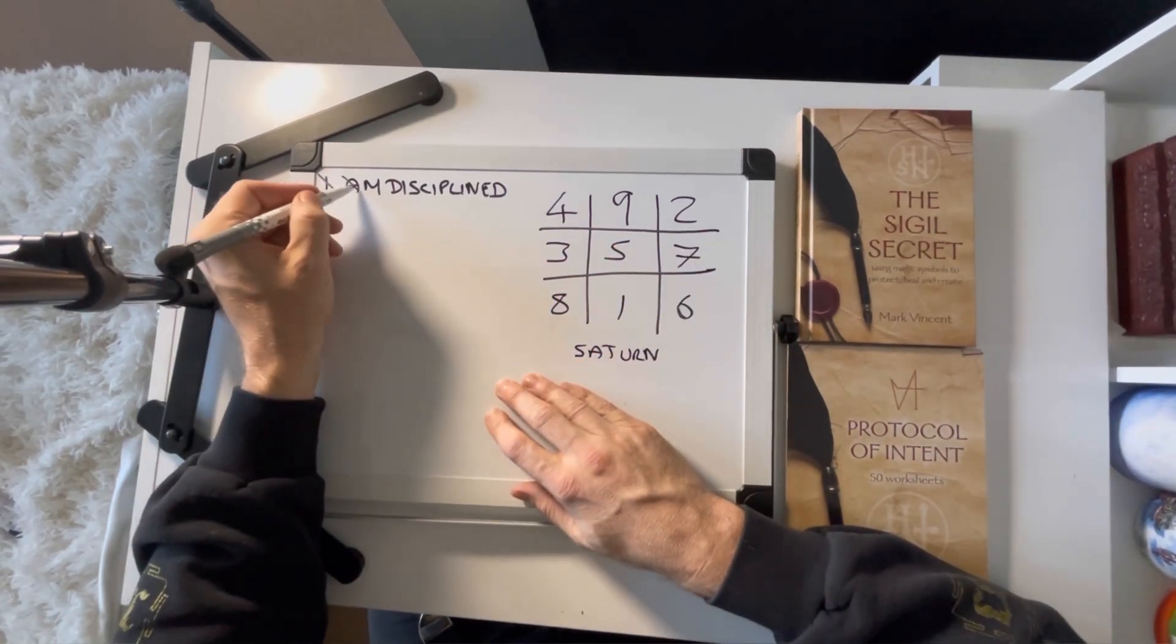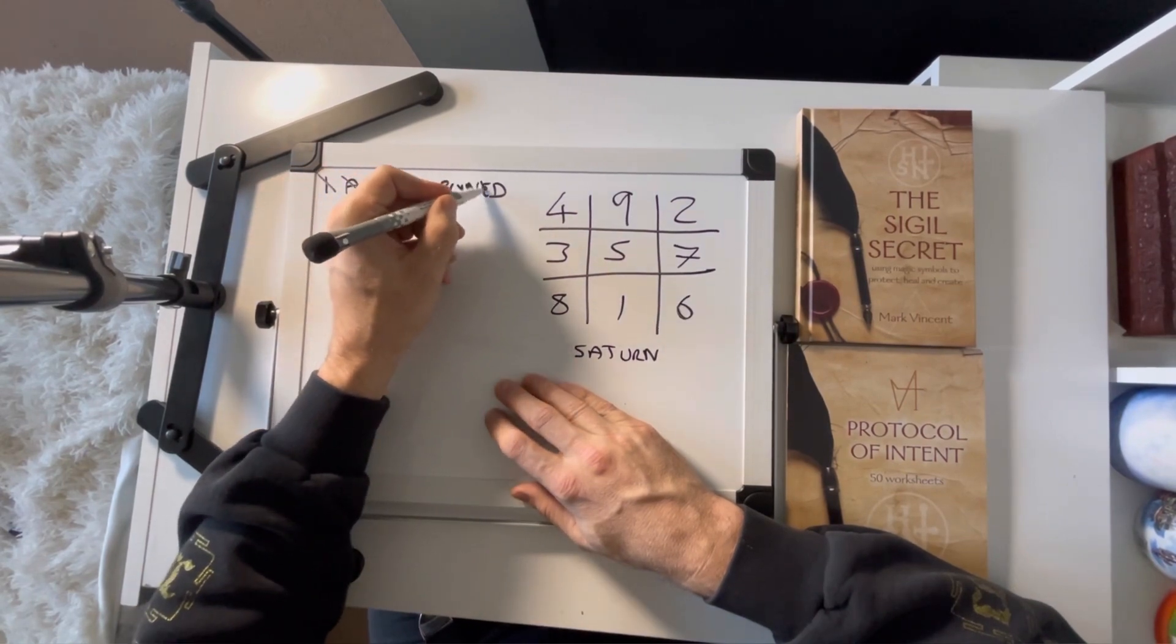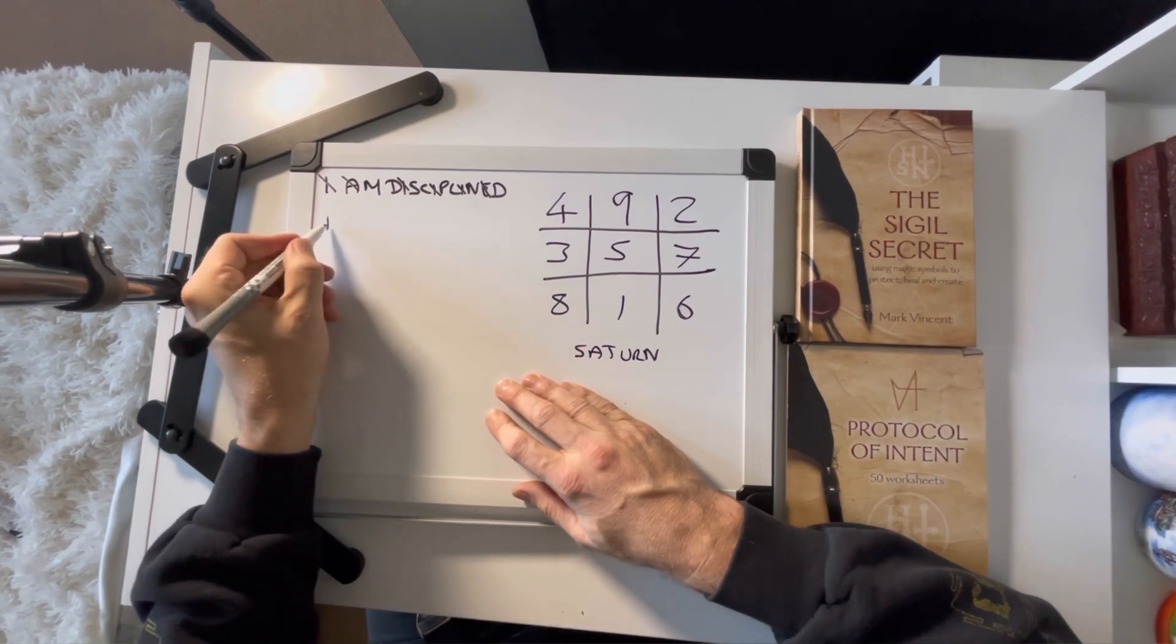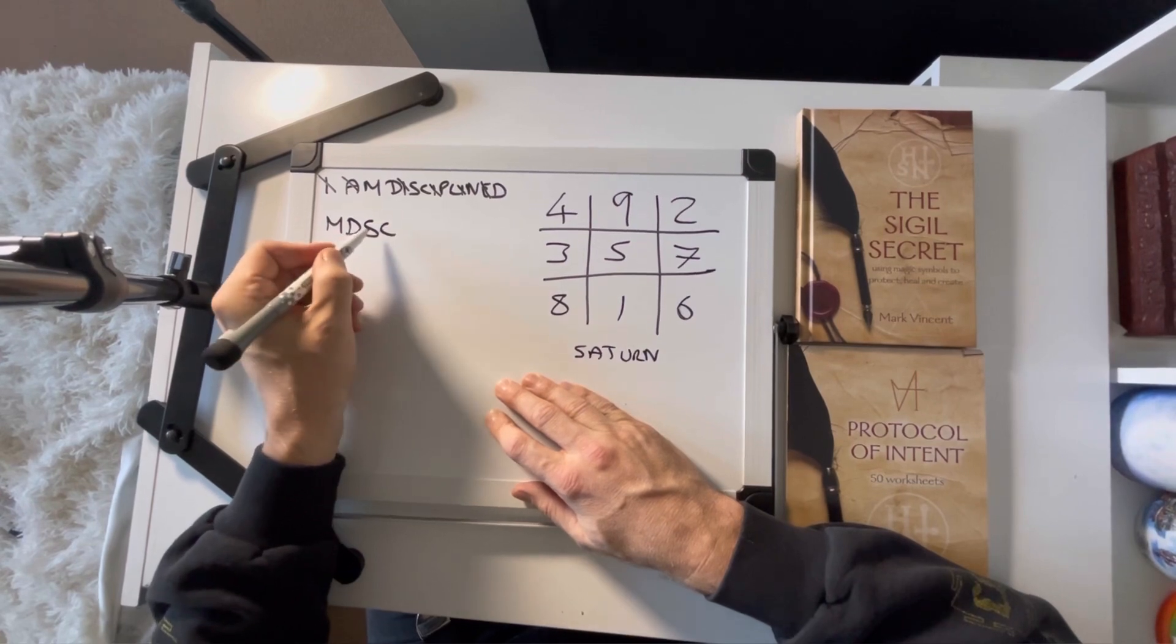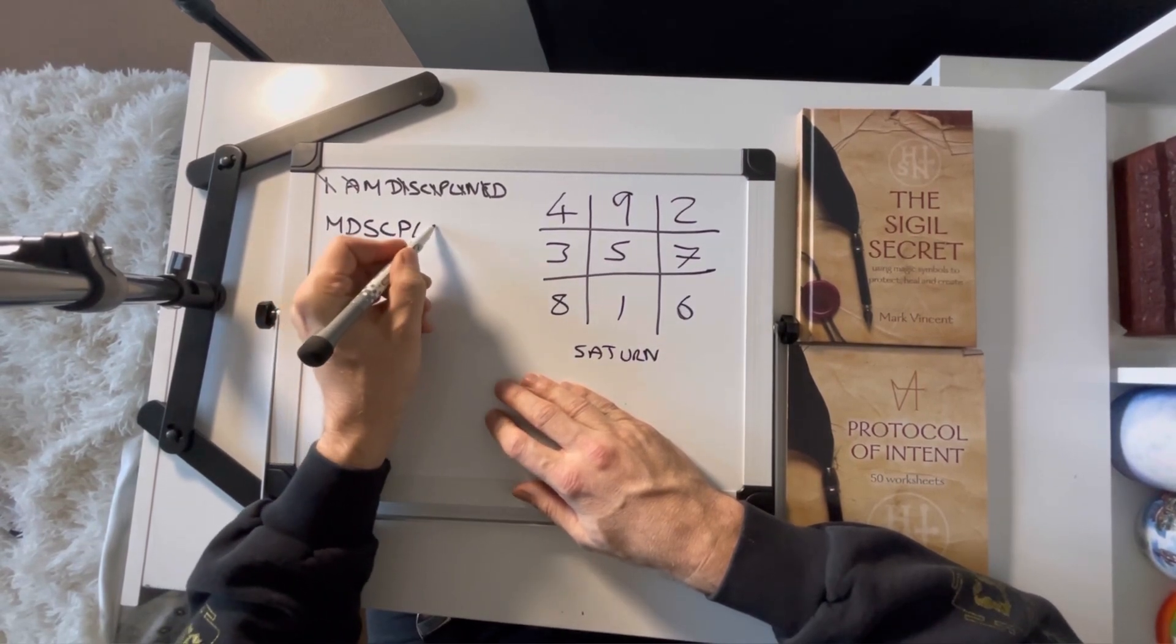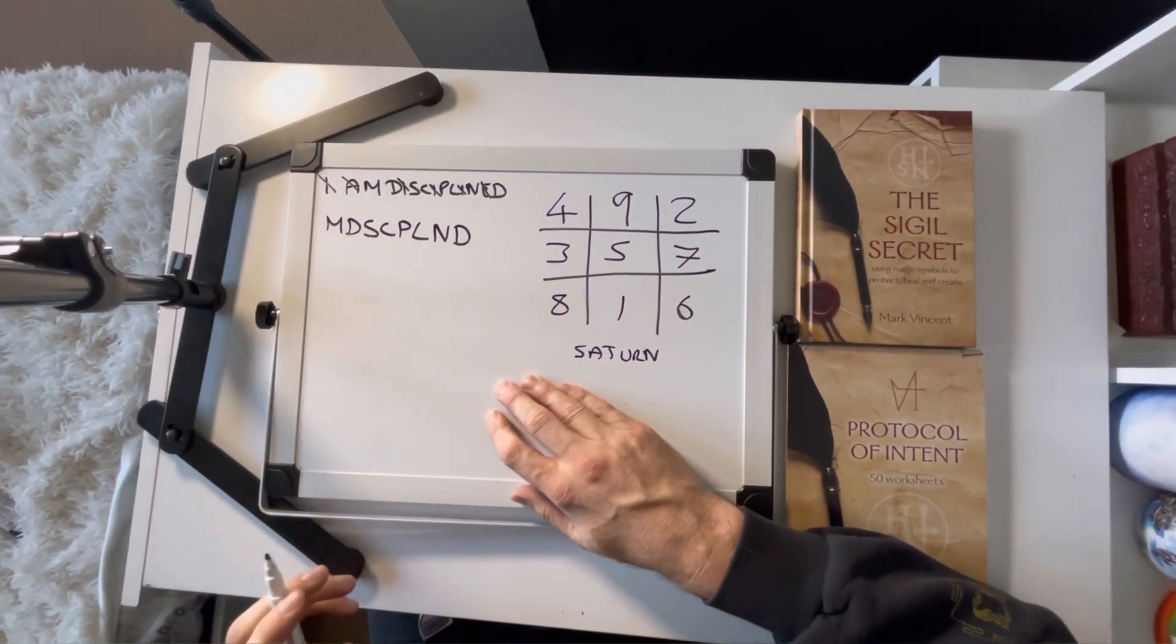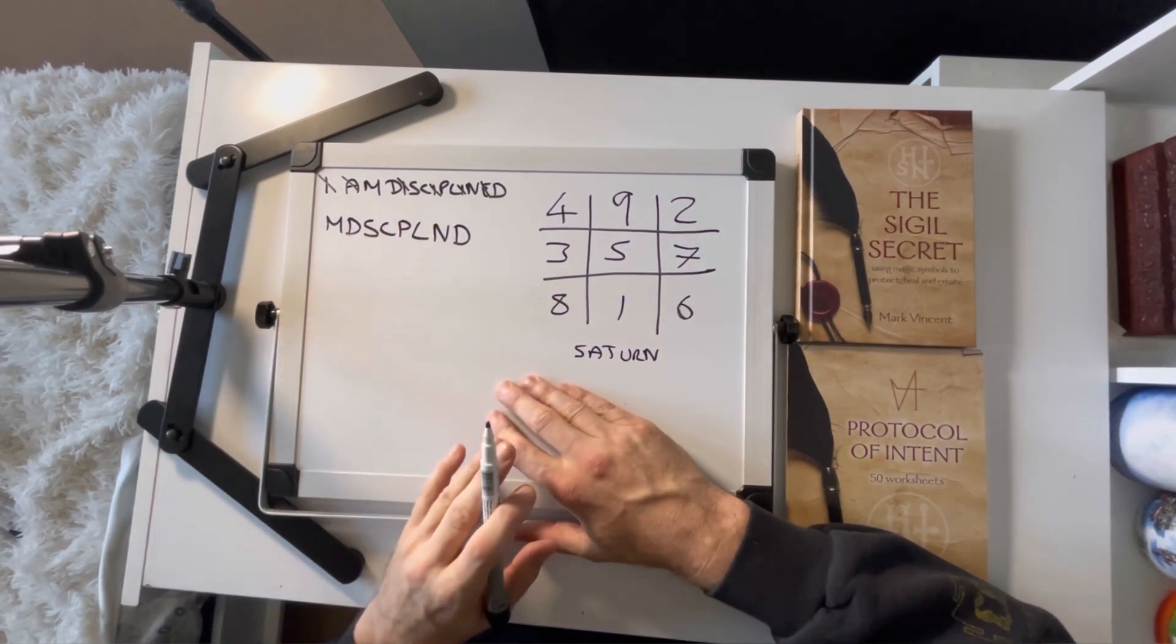So as usual, the first thing we do is remove the vowels. This process is explained in my book in great detail, as Austin Osman Spare sigils as well as planetary. I'm going to say at this point, one is not better than the other. It's purely a preference thing. So we end up with this string of letters here.